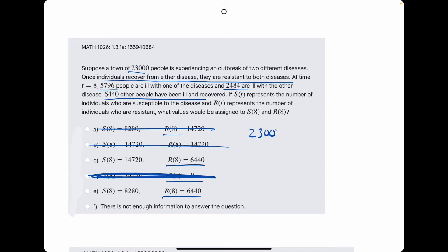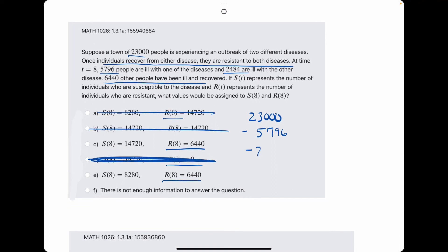So, now we are calculating the number of susceptibles. So, starting with 23,000, we are going to subtract the number of people who are ill with both, you know, with either disease. So, subtracting 5,796, subtracting 2,484.